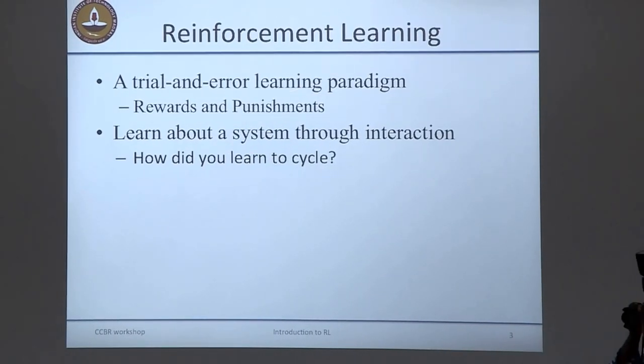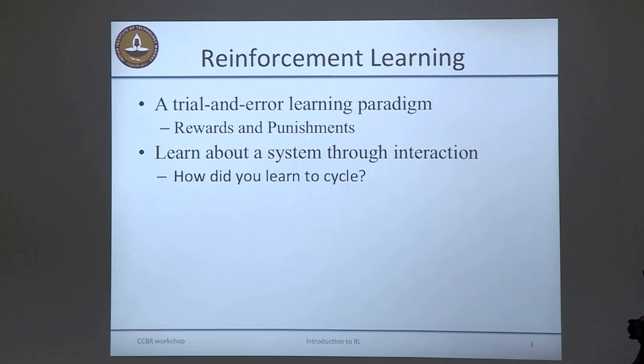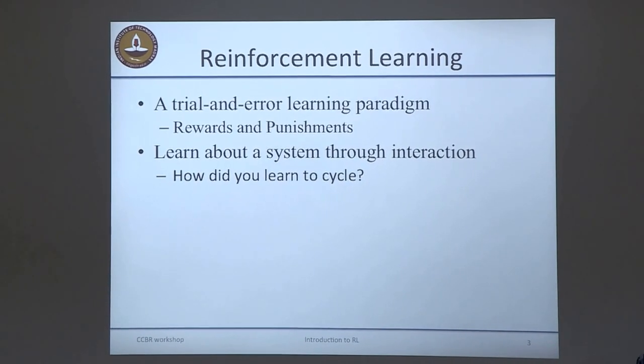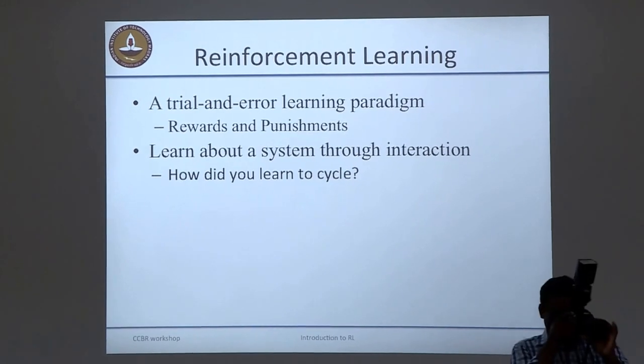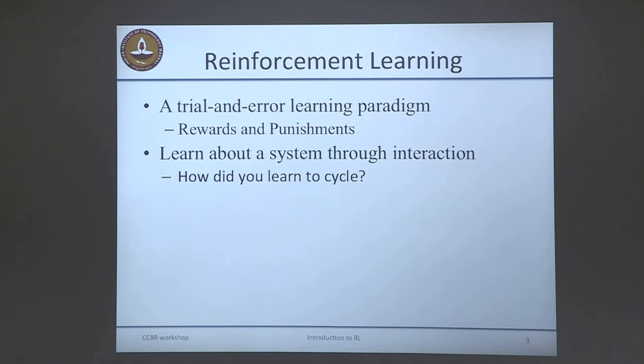Reinforcement learning is a trial-and-error learning paradigm where you learn through rewards and punishments. You learn about a system or learn to control a system, depending on whether it's behavioral or operant conditioning. The whole goal is that you learn about a system through interaction. My students know I never talk about reinforcement learning without asking: how did you learn to cycle? That's one immediately relatable example of trial-and-error learning.